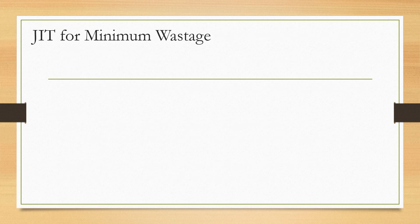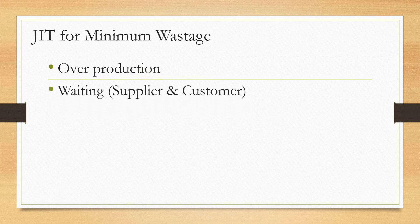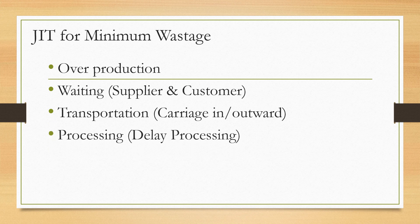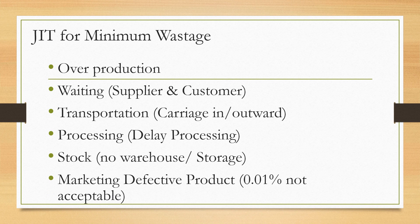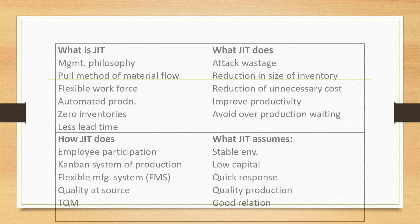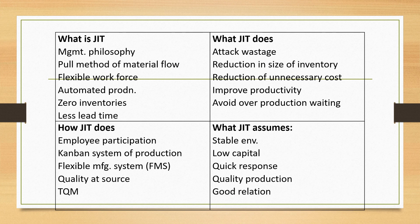Little JIT is the form of production scheduling and inventory management to meet actual demand — material for each stage of production is received and produced just in time. JIT means producing the quantity of units needed, neither more nor less, focusing on the exact date and time. JIT is important for minimum wastage because it reduces overproduction, waiting of suppliers and customers, transportation, order processing delays, and storage — and marketing defects where even 0.01% is not acceptable. In description: JIT is a manual management philosophy, a full method of material flow, uses a flexible workforce, automatic production, zero inventory, and less lead time. JIT attacks waste through reduction of inventory, reduction of unnecessary costs, improved productivity, and avoiding overproduction. It employs kanban systems, flexible management systems (FMS), quality at source, and TQM, and assumes a stable environment, low capital, quick response, quality production, and good relations.